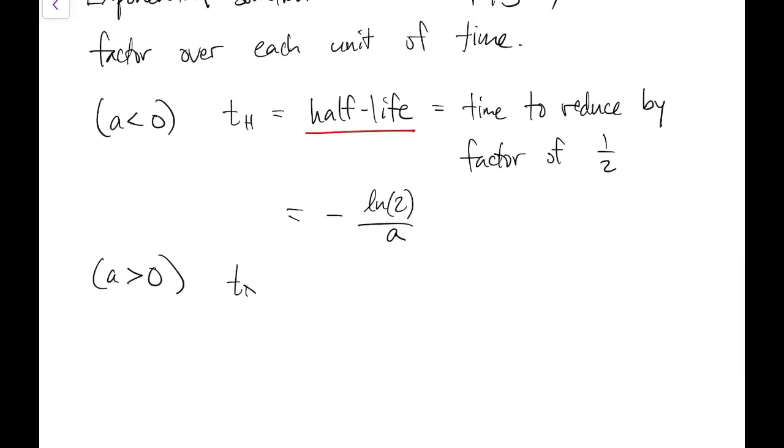On the exponential growth side, the corresponding quantity is the doubling time, T sub d, and that's the time it takes to increase by a factor of two. So after one td, it's gone up by two, but after two tds, it's gone up by four, and so on.